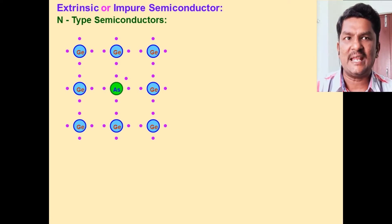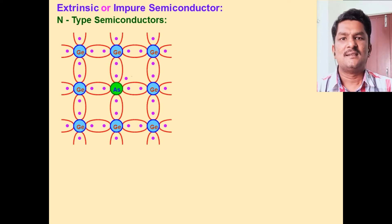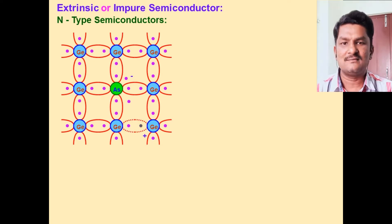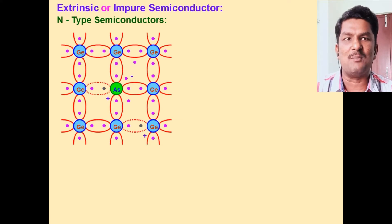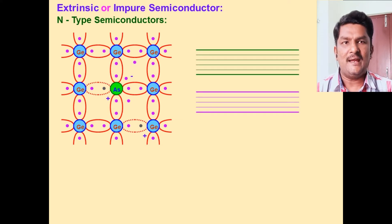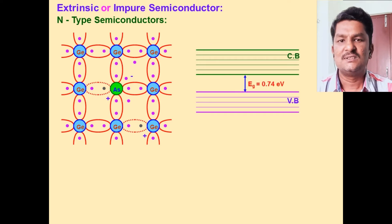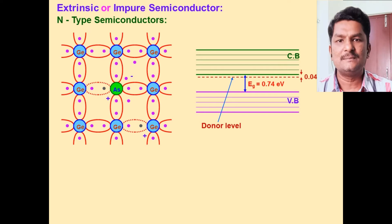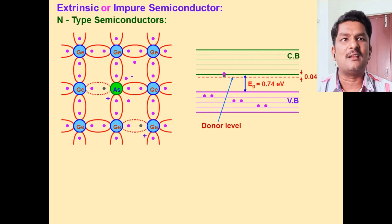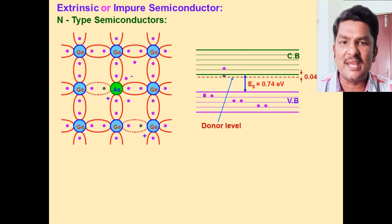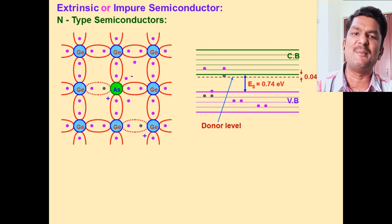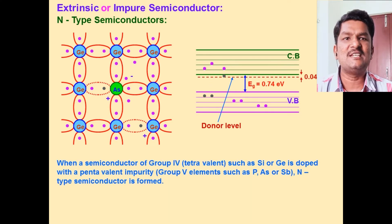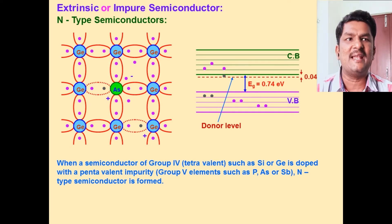First, we discuss N-type semiconductors. Consider a pentavalent impurity, arsenic — its valency is five, so it is ready to form five covalent bonds. But the valency of germanium is four, so four electrons are shared and another free electron is available. The impurity is ready to donate the free electron, so these are called donor impurities. Pentavalent impurities are also named as donor impurities. A small energy level is formed just below the conduction band, called the donor level.